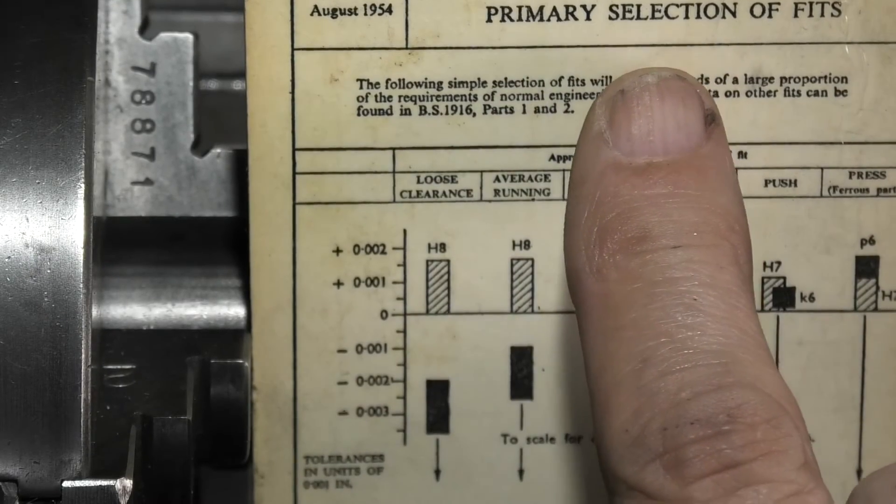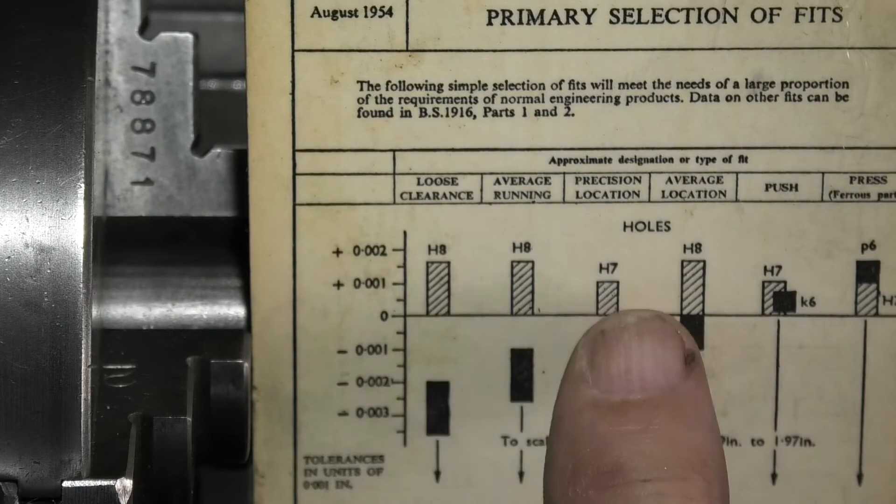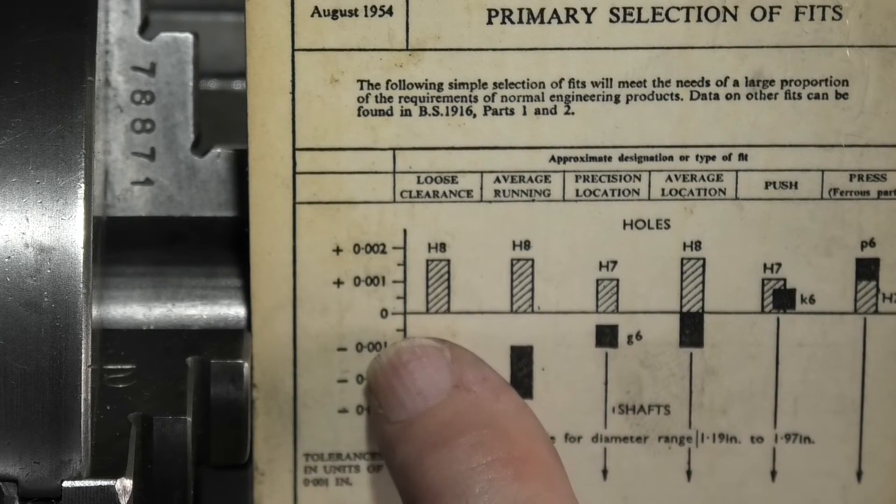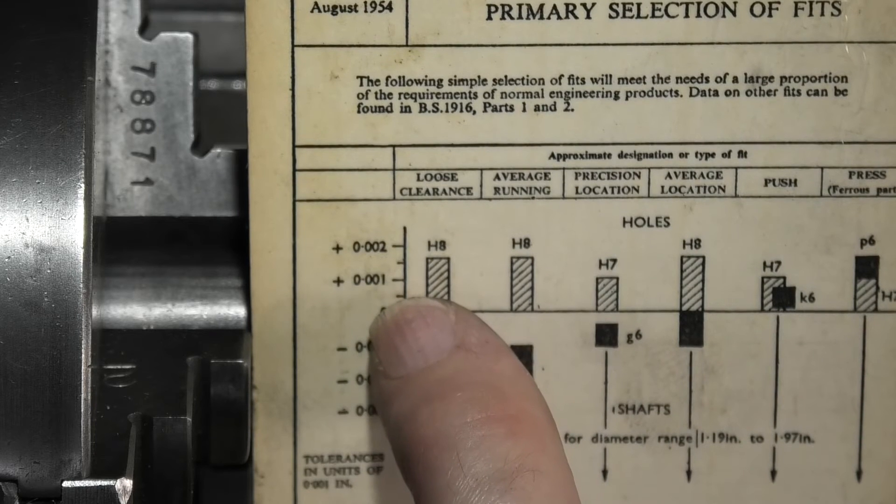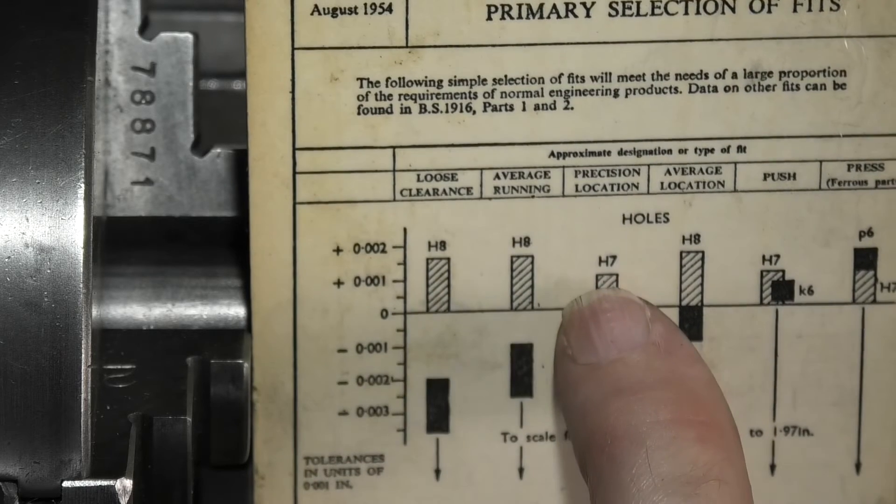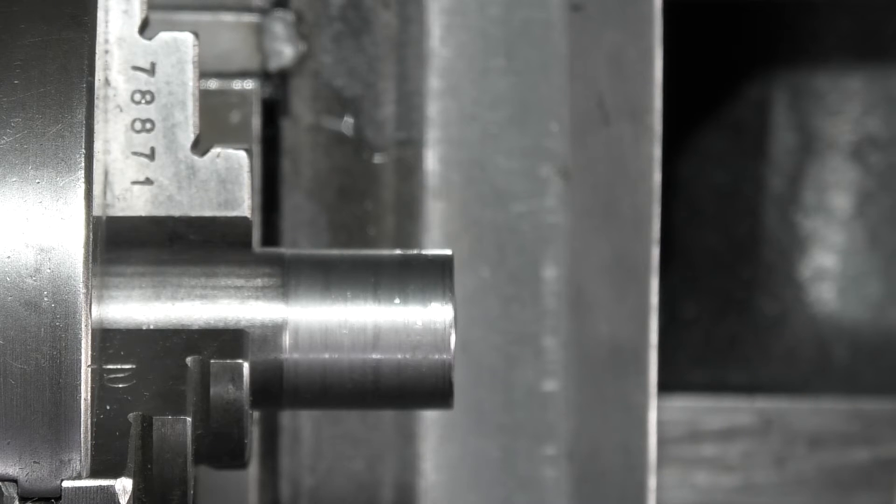So it measured 0.3553. A 9 millimeter should be 0.3543, so it's a thou oversize. Primary selection of fits, this is British Standard. H7 hole, holes on this side, shafts on this side should be from zero up to, I think it's just about a thou, plus a thou and a bit over. So this hole is about a thou and a half oversize.